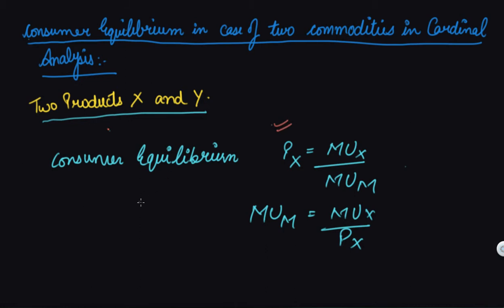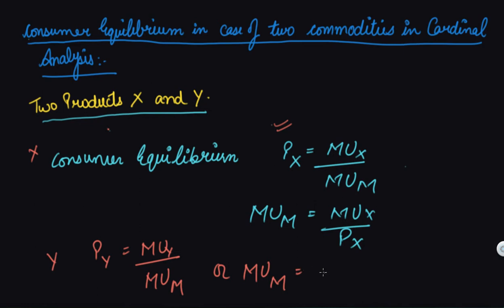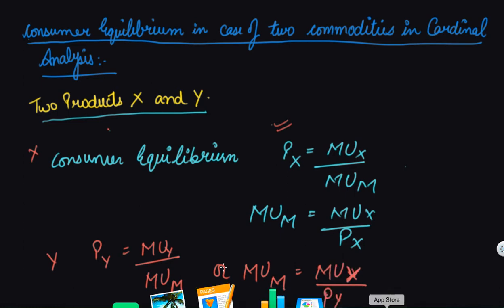The same logic applies to the two-commodity case. For commodity Y: price of Y equals marginal utility of Y divided by marginal utility of money (MU_m). So MU_m equals MU_x divided by price of X, and also equals MU_y divided by price of Y. These are the two equations we derive for the two-commodity case.